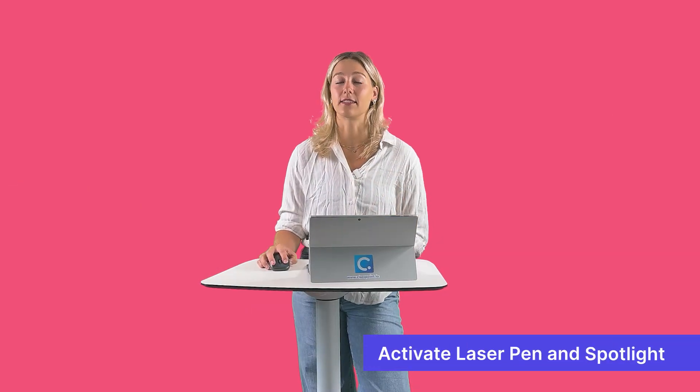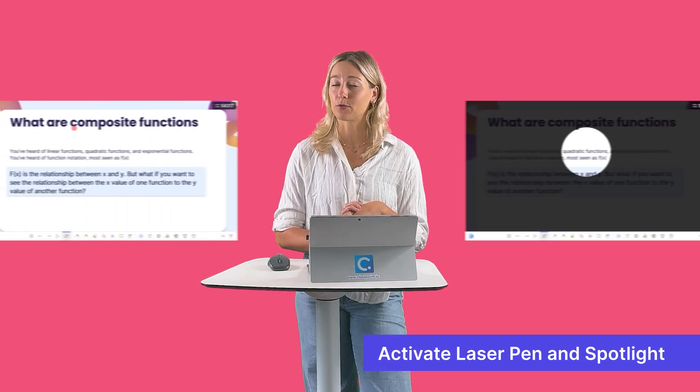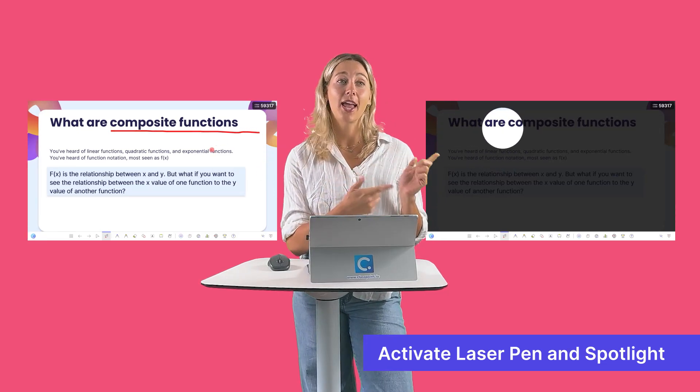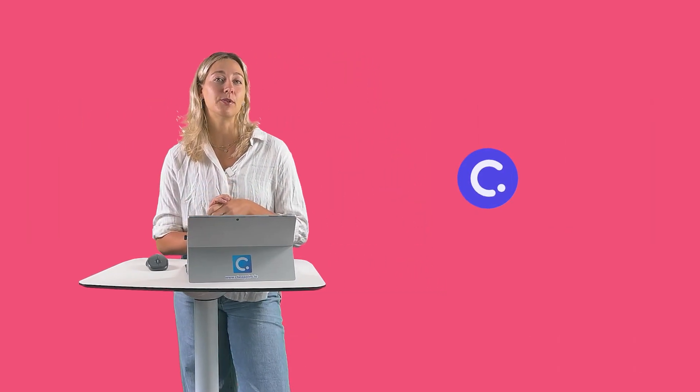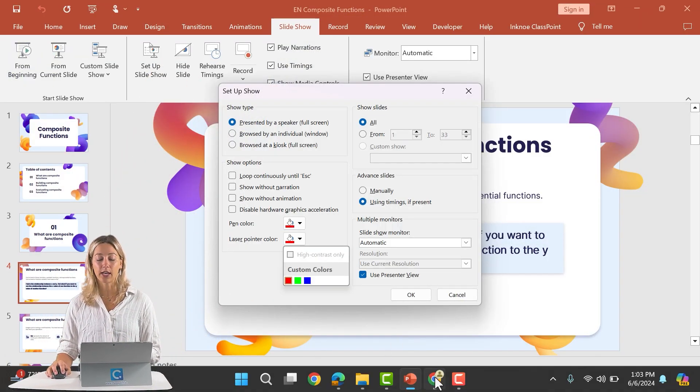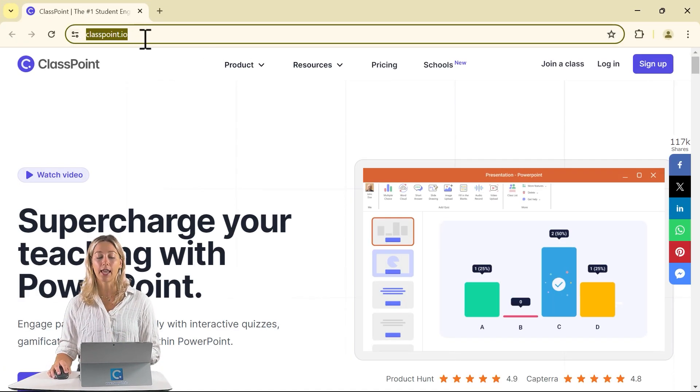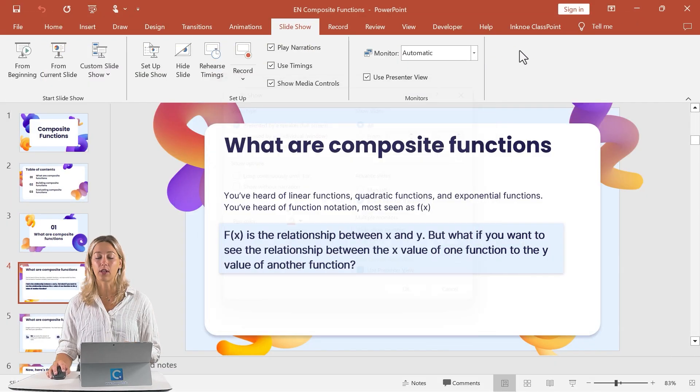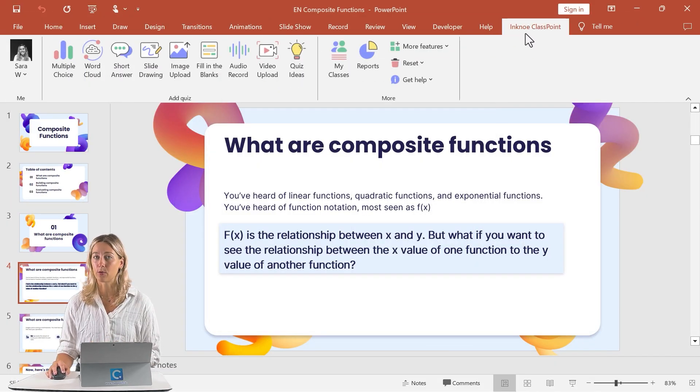Now to more easily access the laser pointer and activate those special features like the disappearing pen and the spotlight, we're going to be using the free PowerPoint add-in ClassPoint. So ClassPoint can be downloaded and installed from classpoint.io. And once that's done, you'll be able to see the INKNO ClassPoint tab here in your PowerPoint ribbon.